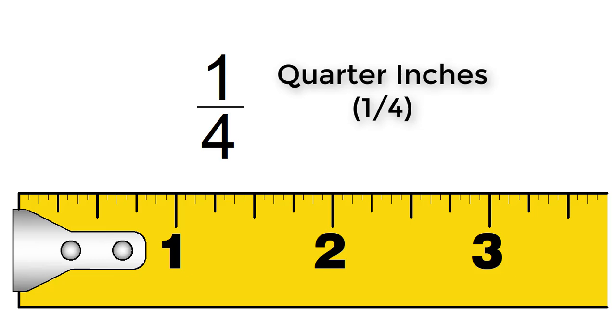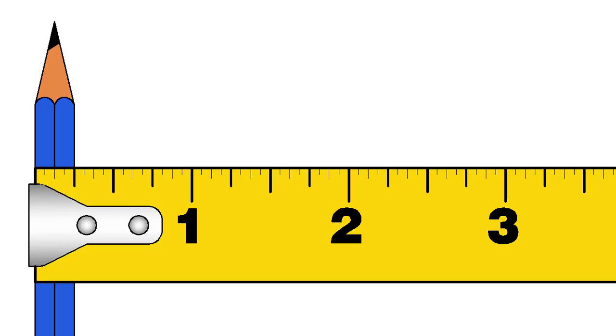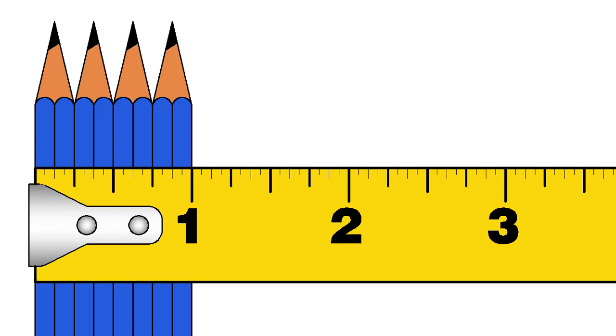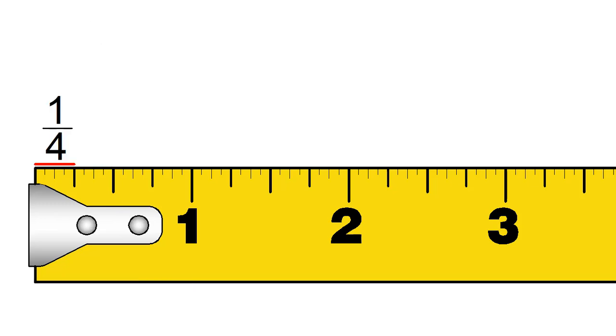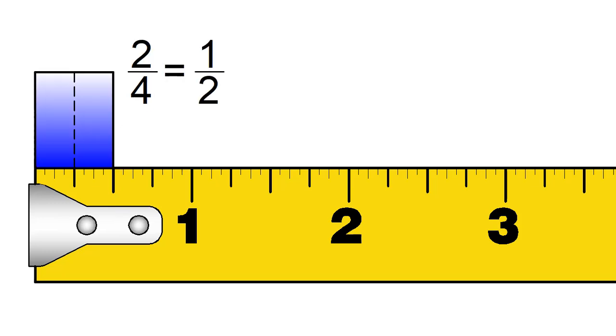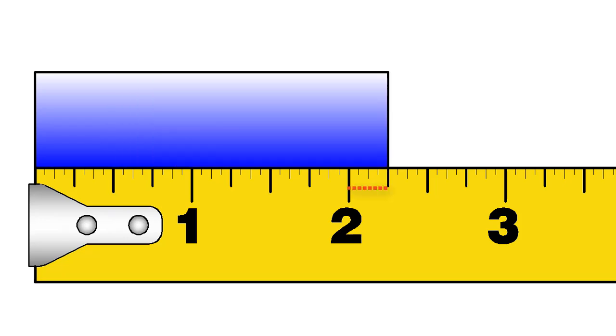Now, let's look at the next smaller marks. Notice that each of the half inches is marked at their own halfway point. These are the quarter or one-fourth inches. With these marks, the inch can be divided into four parts. Each part is a quarter. Notice that if we have two quarters, that is the same as one half.